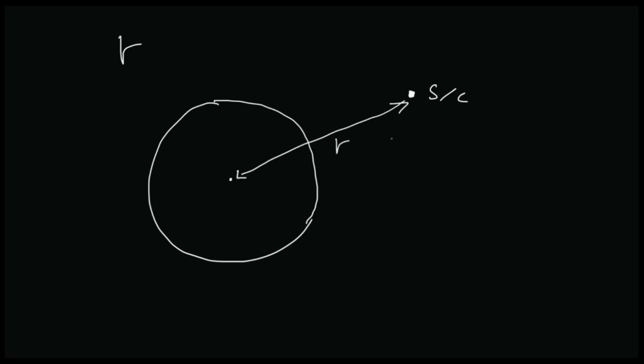And the distance from the center of the Earth to the spacecraft is R. And a lot of the times, even in undergraduate level, students make a mistake where they say R is the distance from the surface of the Earth to the spacecraft. No, that's the altitude.